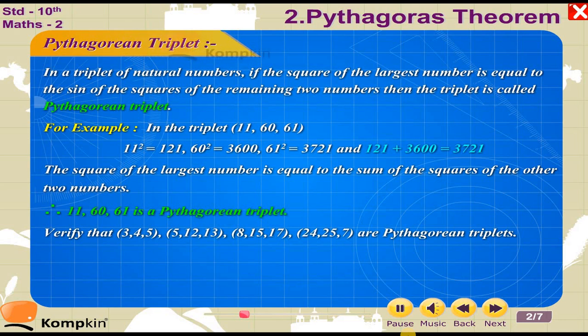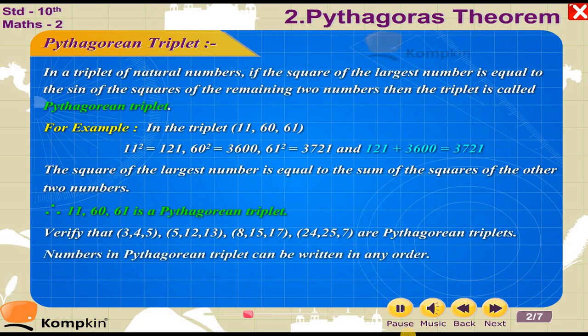Verify that 3, 4, 5 and 5, 12, 13 and 8, 15, 17 and 7, 24, 25 are Pythagorean triplets. Numbers in a Pythagorean triplet can be written in any order.